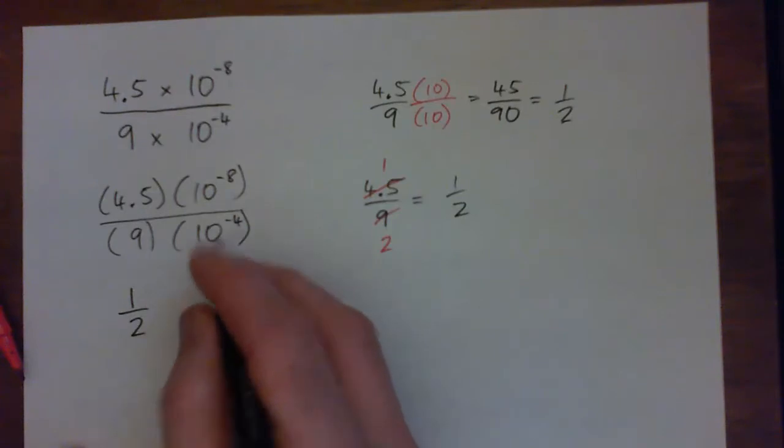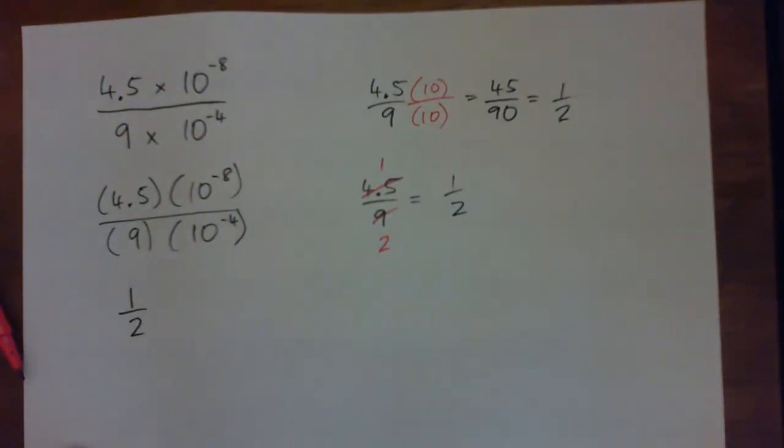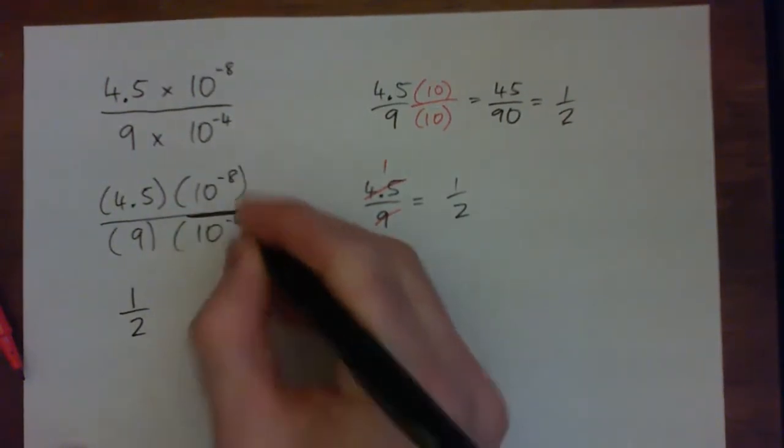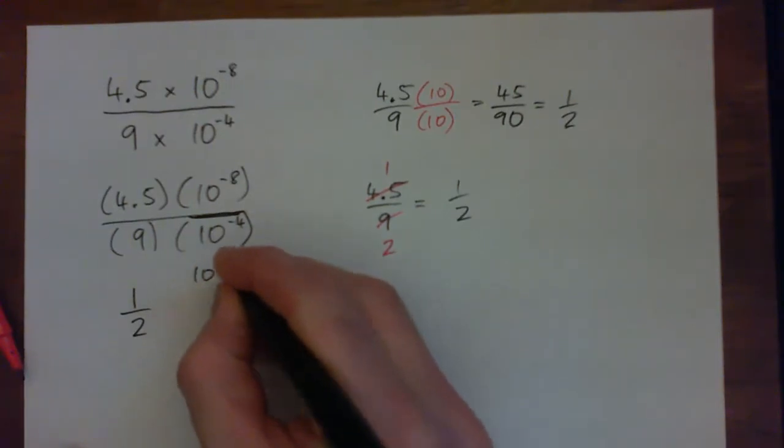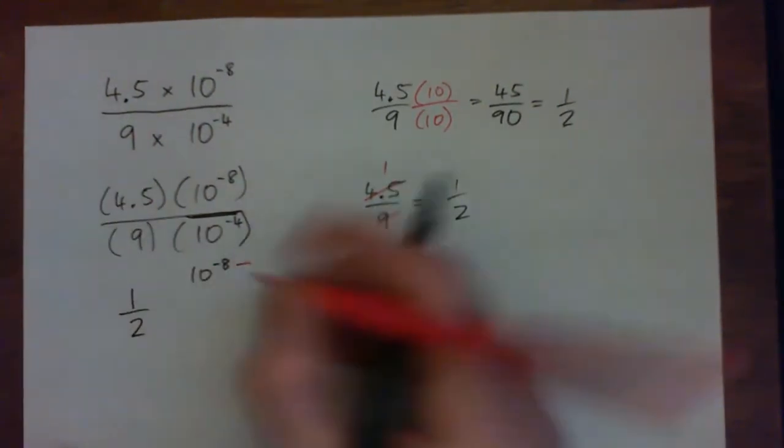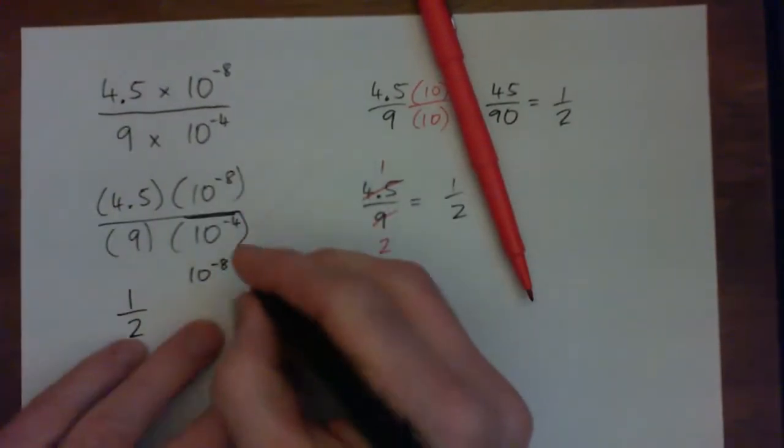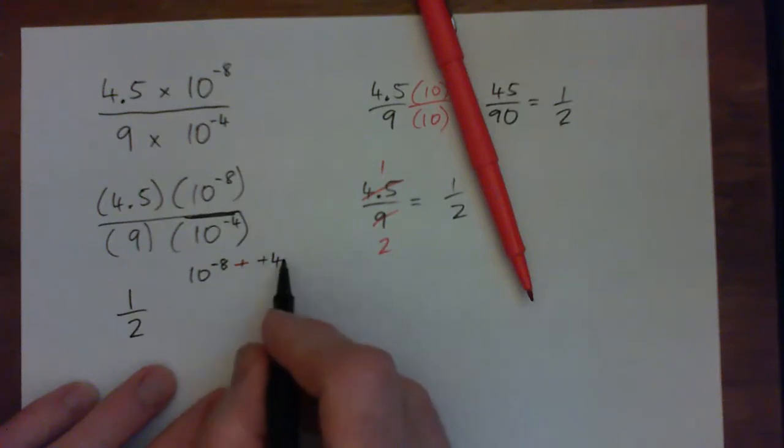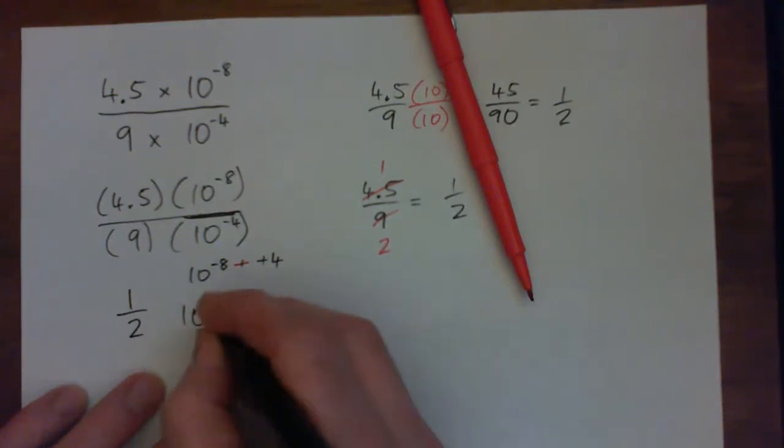And then we have 10 to the power of negative 8 over 10 to the power of negative 4. Now if you remember, when you divide, you need to subtract the exponents. The top ones subtract the bottom ones. So it's 10 to the power of negative 8 minus negative 4. And negative negative makes plus plus. So it becomes negative 8 plus positive 4. 8 bad guys, 4 good guys, 10 to the power of negative 4.